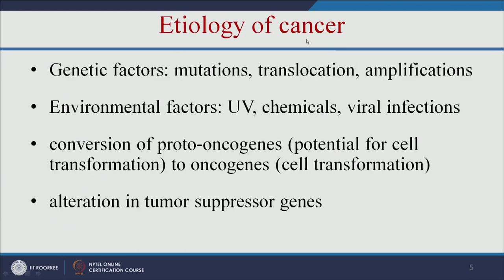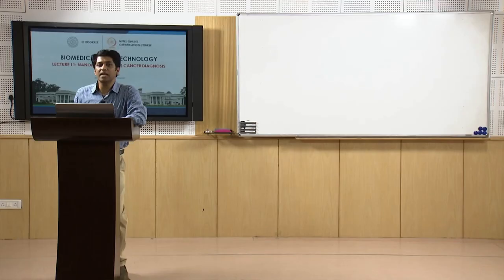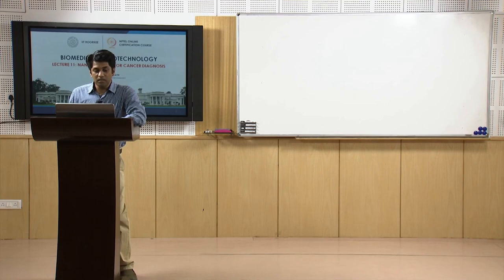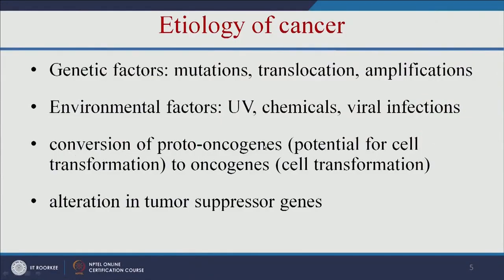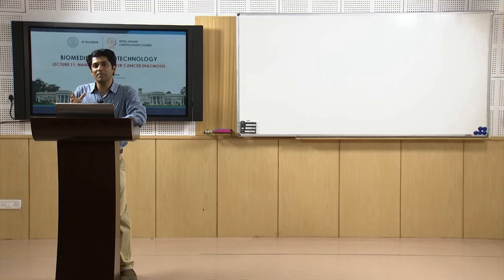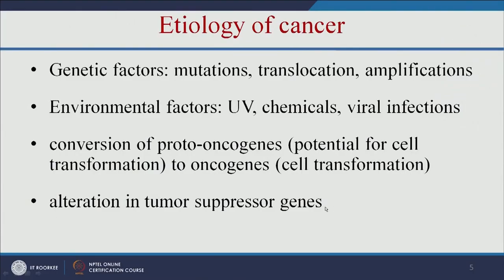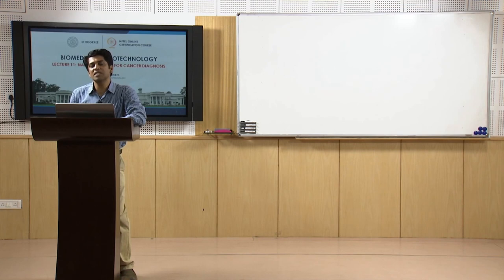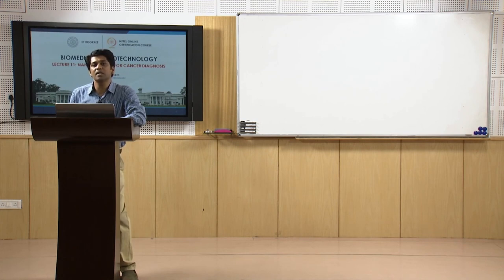The first reason for cancer is genetic factors — it may be due to mutations, translocation, or hereditary causes. The next reason is environmental factors like UV, chemicals, or viral infections. If a person is working in a chemical industry, they have a high chance of getting cancer. What happens in cancer is the conversion of proto-oncogenes to oncogenes. Each cell has proto-oncogenes; when these are converted into oncogenes, the normal cell becomes a cancer cell. Also, alteration in the tumour suppressor genes — which suppress tumour growth — leads to a high chance of getting cancer.